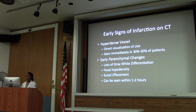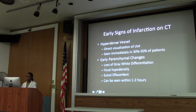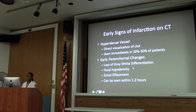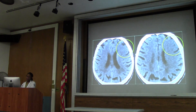We talked about the hyperdense vessel sign, which is direct visualization of the clot - seen immediately in about 30 to 50% of patients. You see this a lot earlier than the insular ribbon sign. Loss of grey-white differentiation, focal hypodensity, subtle sulcal effacement - these can be seen within one to two hours with the insular ribbon sign. These are very early, easily missed signs of stroke.